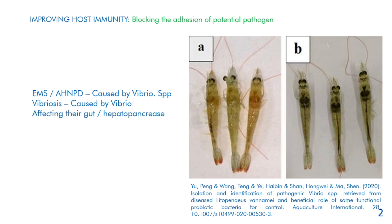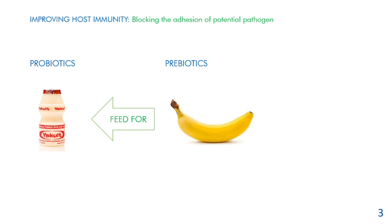A good way to think about gut health in the aquaculture sector is to look for analogies in the human world. One of the most popular drinks you can find in any local supermarket across Southeast Asia is Yakult, which is a probiotic drink to improve the gut health of your intestine. What it does is populate your gut with beneficial bacteria so that you have a stronger gut, which will improve your immune system and also improve digestion.